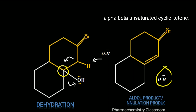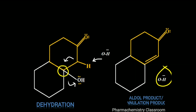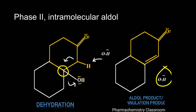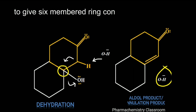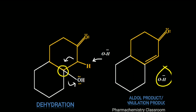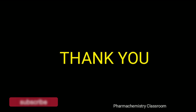To summarize: the Robinson annulation begins with Michael addition followed by an intramolecular aldol condensation to give a new six-membered ring containing an alpha-beta unsaturated ketone. Thank you, I hope you understand this reaction.